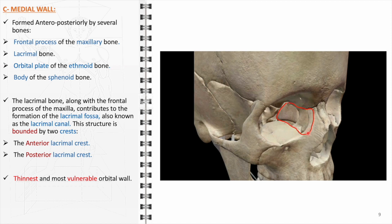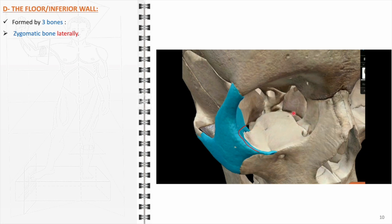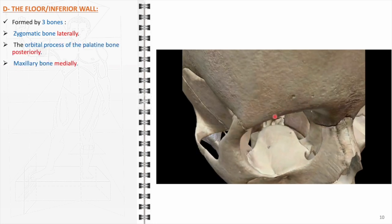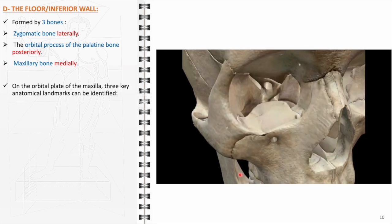Any compromise to the integrity of the medial wall can have significant repercussions, affecting the eye's protective mechanism and potentially impacting the orbital contents. The floor or inferior wall of the orbit is composed of three bones: the zygomatic bone situated laterally, the orbital process of the palatine bone posteriorly, and the maxillary bone medially. On the orbital plate of the maxilla, three key anatomical landmarks can be identified: the infraorbital groove leading into the infraorbital canal, marking the path for the infraorbital nerve and vessels, which culminates at the infraorbital foramen on the anterior surface of the maxilla.